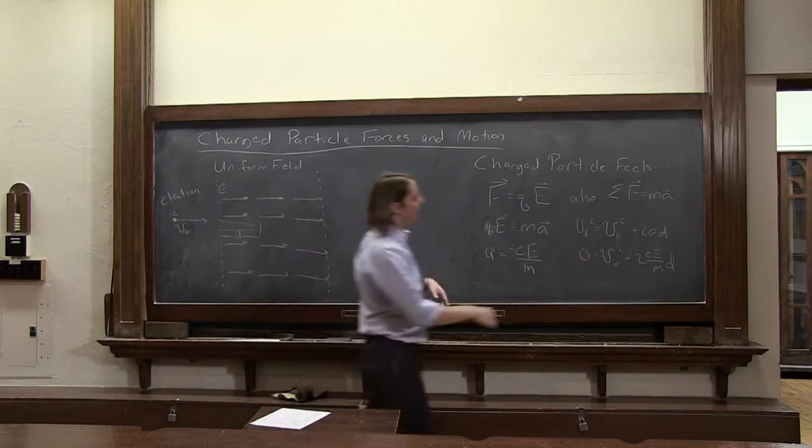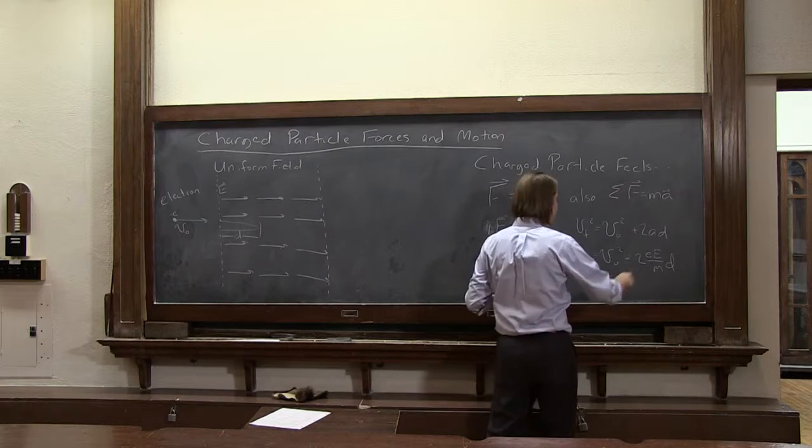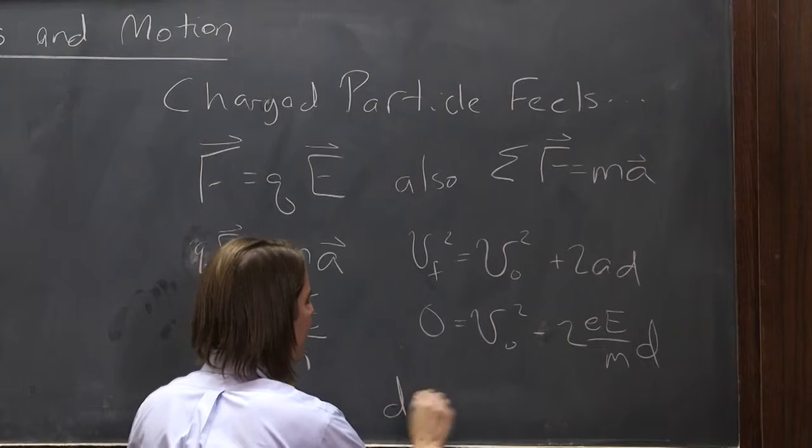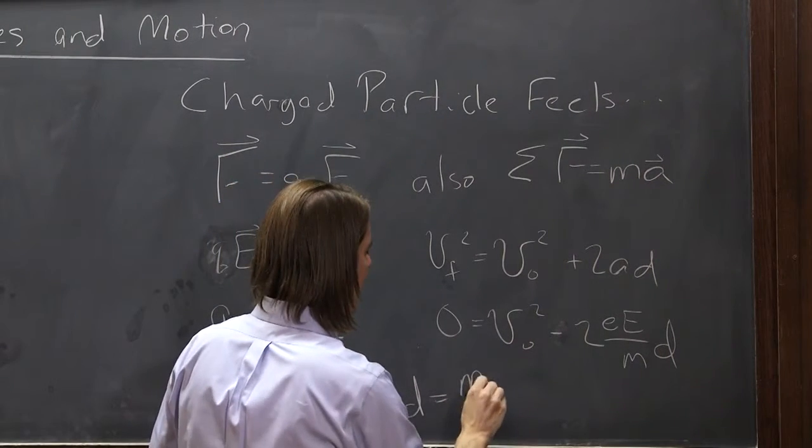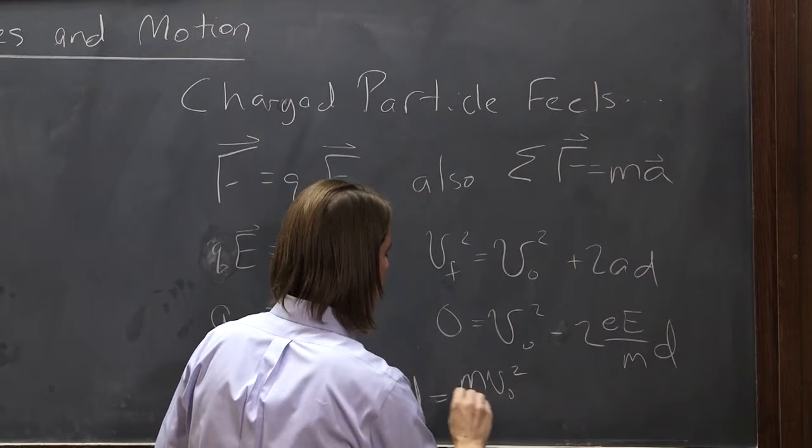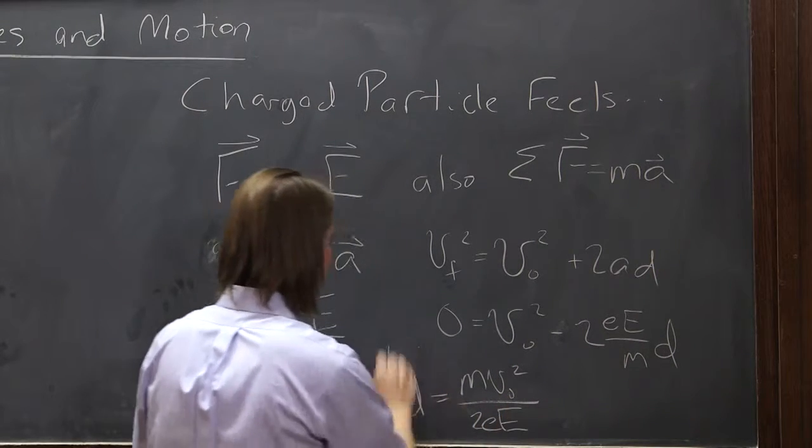So if you turn all this around and solve it, what do you get? You get this comes over here, all the positives work out, and you get the d. How far in it goes into the field must be m v naught squared over 2 times the charge, times the electric field magnitude.